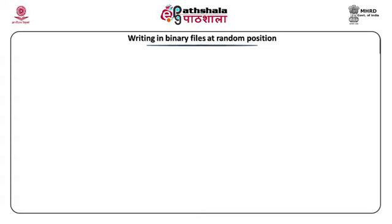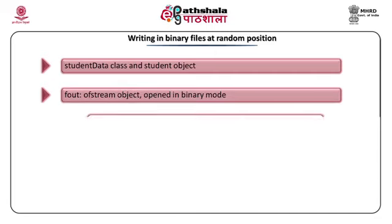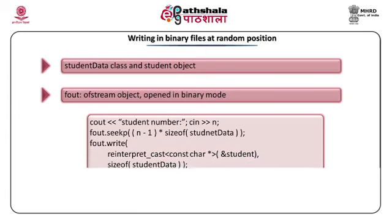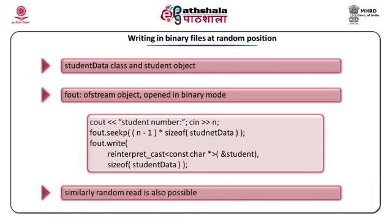In binary files we can also write at a random position. Suppose we have a student data class and student is an object. We create an ofstream object fout opened in binary mode. To write data directly at the 10th position, we skip the size of 9 previous records using fout.seekp(9 * sizeof(StudentData), ios::beg), and then write at the current position using fout.write(reinterpret_cast<char*>(&student), sizeof(StudentData)). Similarly, binary read from a file uses the read() function, very similar to how we used cin.read() in previous modules.